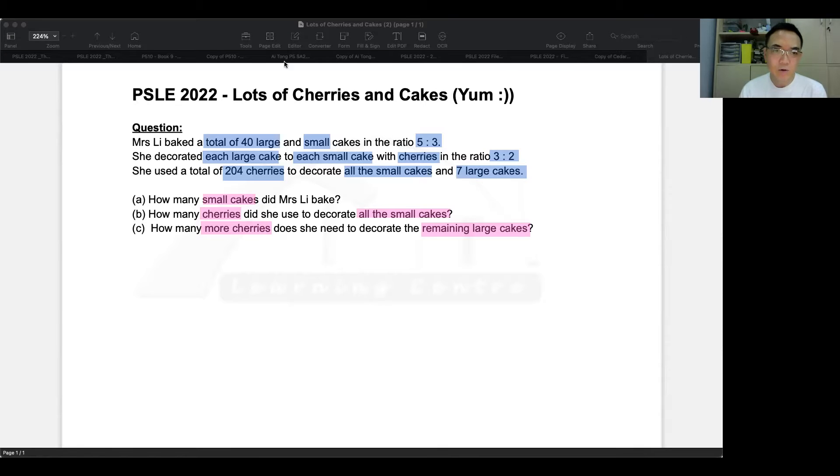First, we are going to use the beginning ratio, and the ratio is five is to three. This five is to three is based on the number of cakes, and there are 40 cakes. Before I go on, I just want to highlight, three is to two is based on cherries, not cakes, so this is a different ratio.